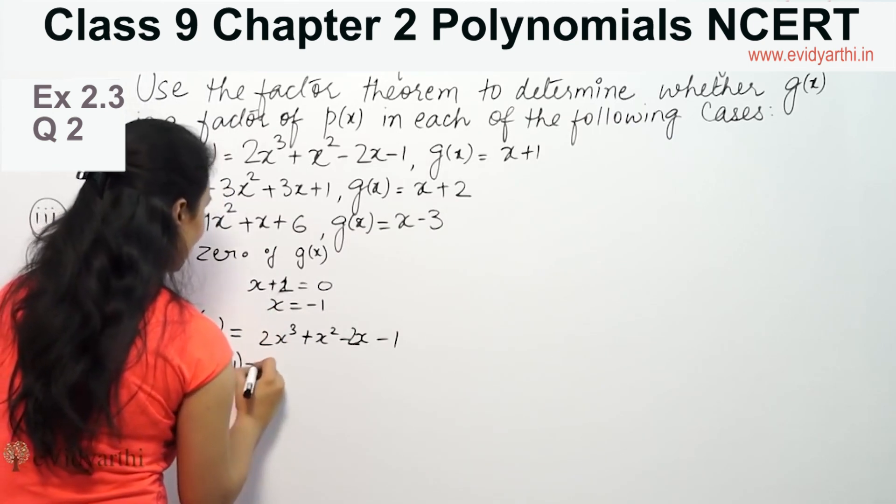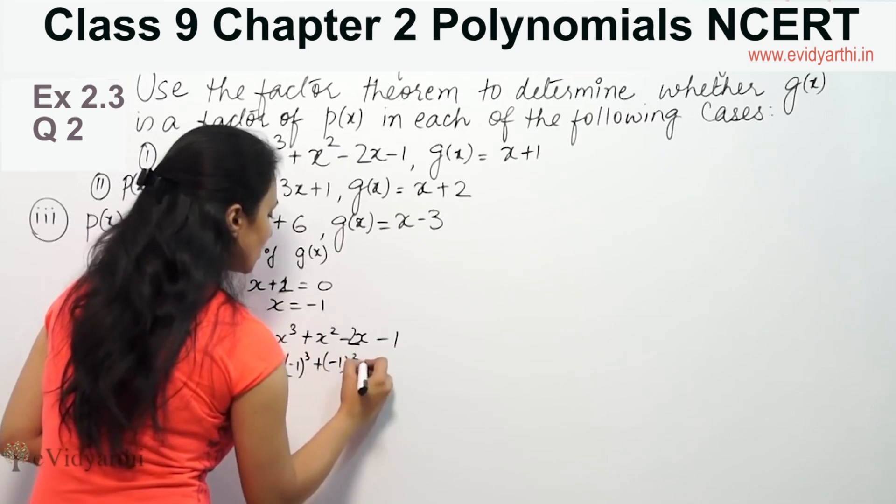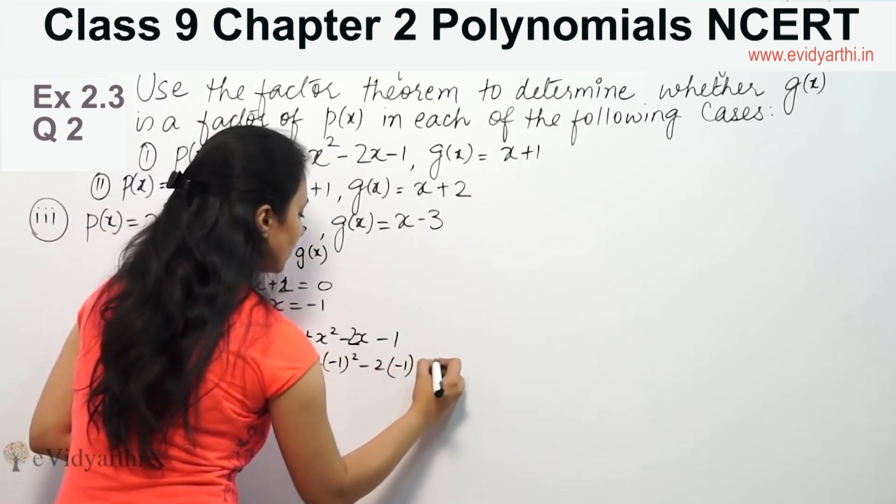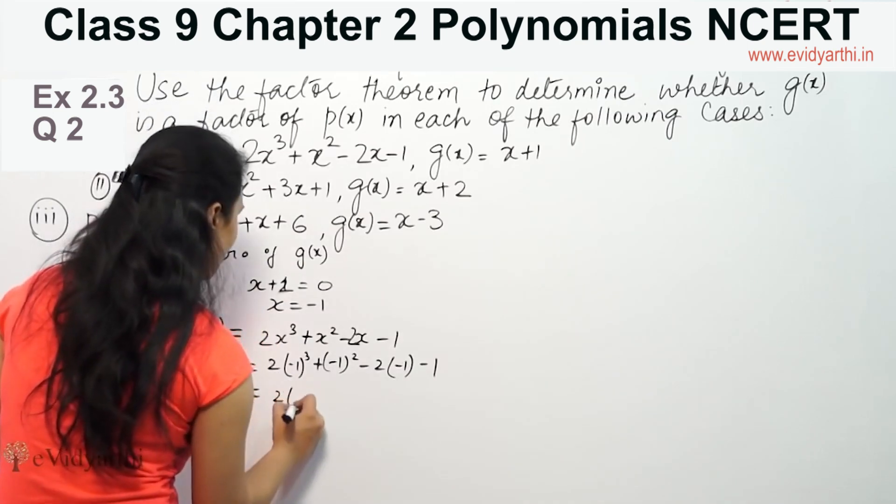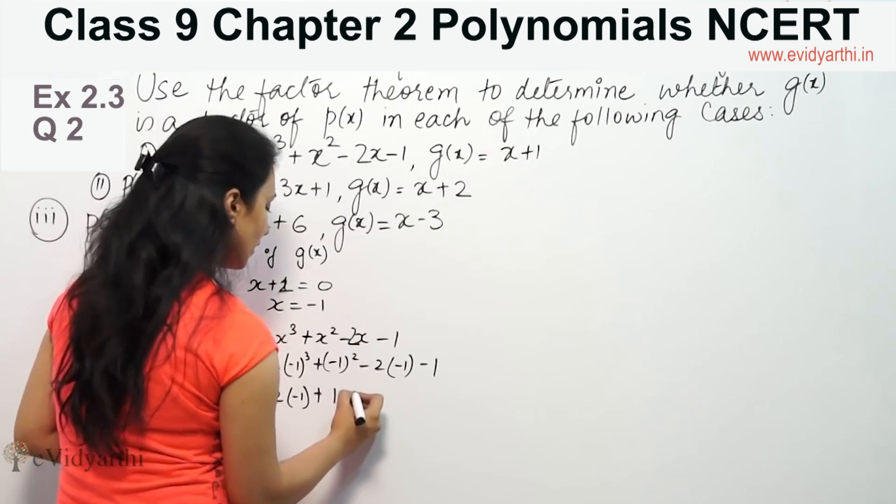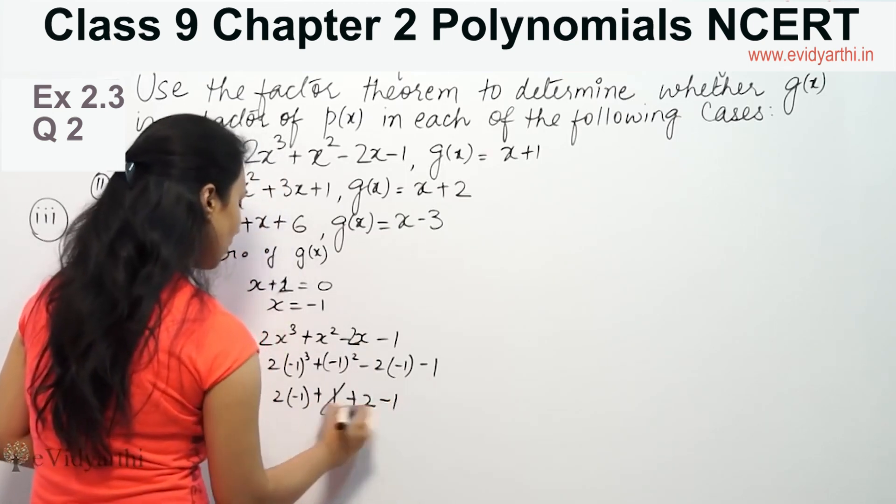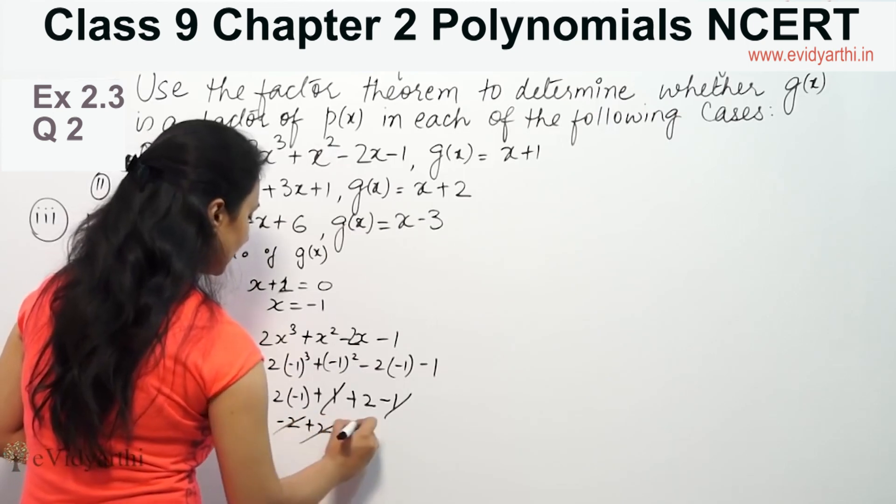Here we put x equals minus 1. So 2 times minus 1 cubed plus minus 1 squared minus 2 times minus 1 minus 1. Positive negative cancel, positive negative cancel. This is minus 2 plus 2, cancel, zero.